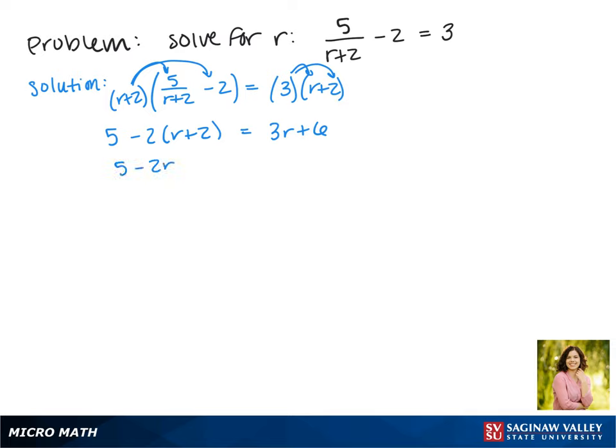Now on the left we have 5 - 2r - 4, and that equals 3r + 6.